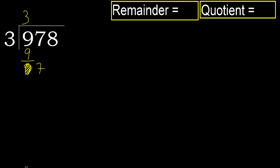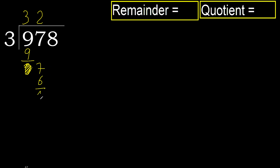3 multiplied by 3 is 9, which is greater. 3 multiplied by 2 is 6, which is not greater. Subtract. Next.